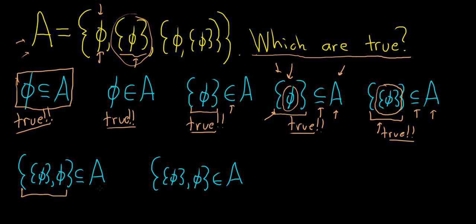This is saying that this is a subset of A. This means that these elements must also be in A, and they are. They are both in A. Therefore, the set containing these elements is a subset of A.